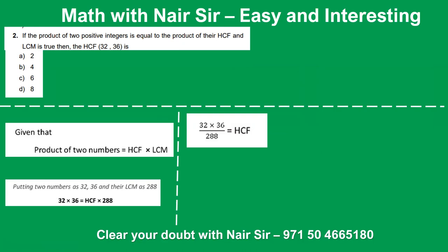Solving the equation: 32 × 36 = HCF × LCM. So HCF = (32 × 36) / LCM. Using the table of 8: 8 × 4 = 32, 8 × 3 = 24, 8 × 5 = 40, 8 × 6 = 48. After cancellation, 36 and 36 cancel out and the answer is 4.